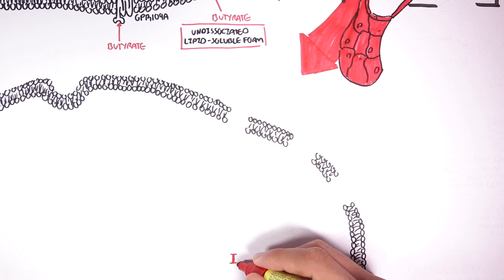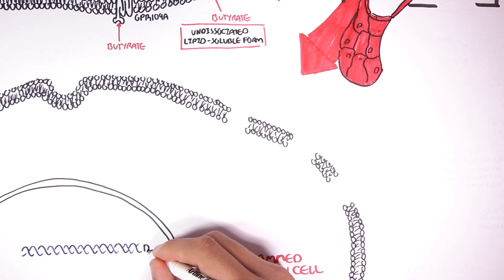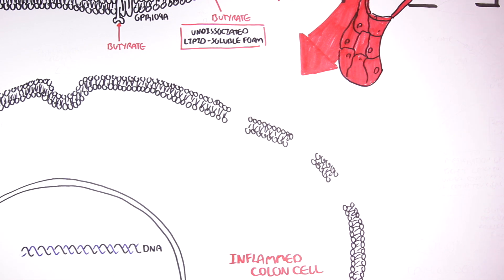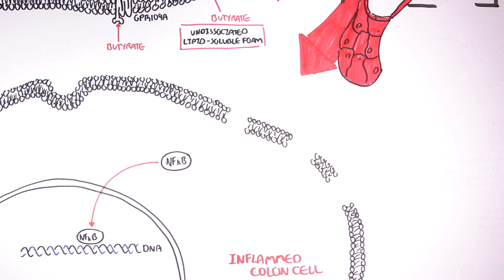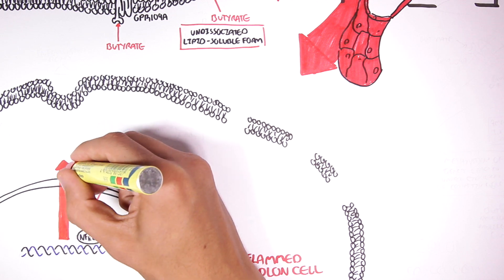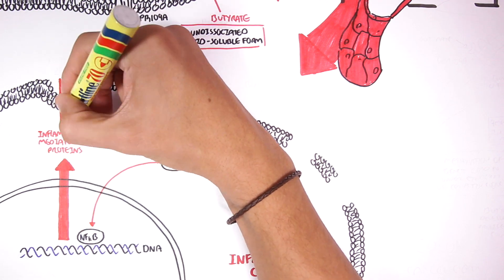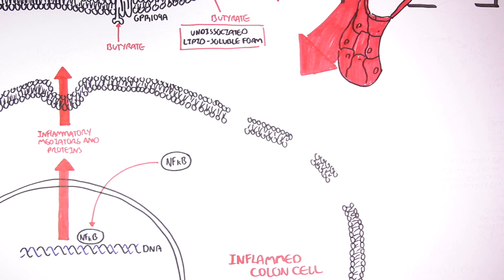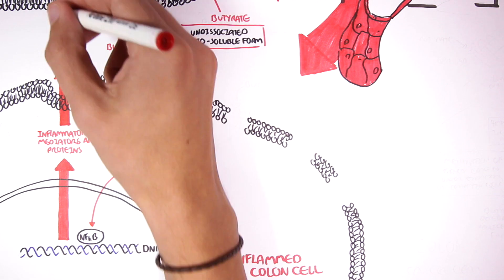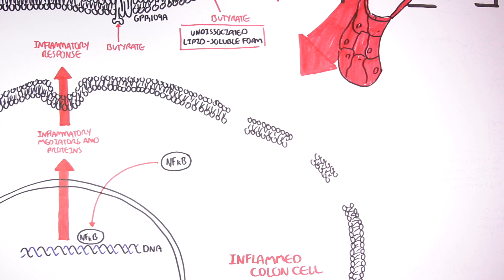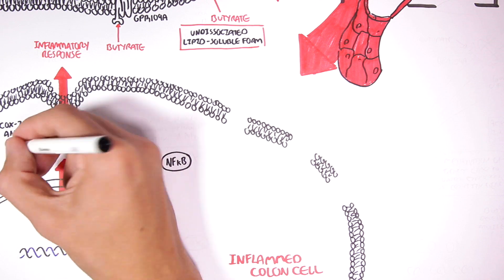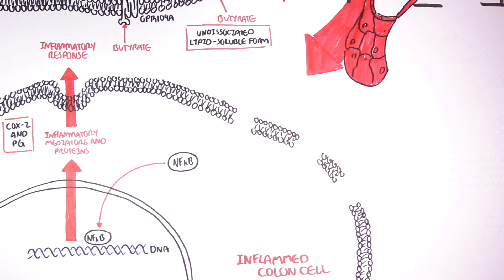So here we have an inflamed colon cell. In an inflamed cell, there is activation of transcription factors that control the expression of inflammatory cytokines and other proteins. One of these transcription factors is nuclear factor Kappa B. Nuclear factor Kappa B will stimulate the transcription of RNA that will produce inflammatory mediators and cytokines, which are then released by the inflamed cell. These inflammatory proteins will promote the inflammatory response. Examples of these proteins and enzymes produced are COX-2 and prostaglandins.